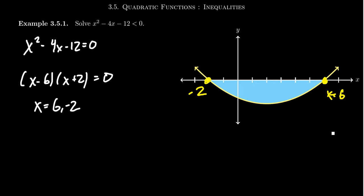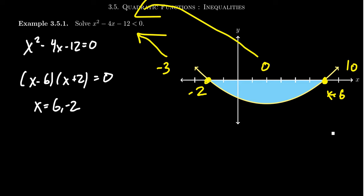Looking at the inequality, we could pick a test point because we have different intervals. We want something less than negative 2, like maybe negative 3; something between negative 2 and 6, like 0; or something bigger than 6, like maybe 10. You could try plugging these numbers into the original inequality and see what happens. If you get a true result, then that's part of the solution set. If not, then no.